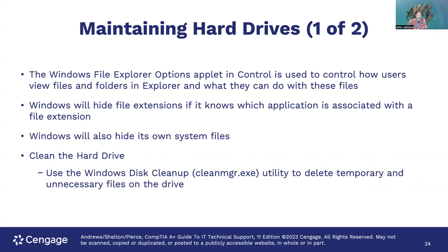Maintaining hard drives: the Windows File Explorer Options applet in Control Panel controls how users view files and folders in Explorer and what they can do with those files. Windows will hide file extensions if it knows which application is associated with them. One of the first things to do on a new system is enable hidden files and system files so you know what's where. This also helps avoid issues like accidentally double-entering a file extension.